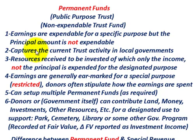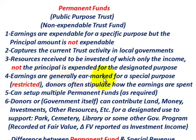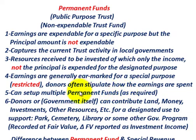Secondly, permanent funds capture the current trust activity of local governments. Thirdly, the resources received are to be invested, of which only the income — not the principal — is to be expended for a designated purpose. Any income off those donations or transfers into the permanent fund means the principal must stay intact, but any earnings off the principal can be spent. Earnings are generally earmarked and restricted for a special purpose, and donors often stipulate how those earnings are to be spent. You can also set up multiple permanent funds within a governmental unit, whatever is required.